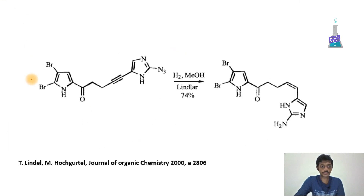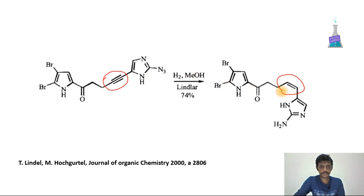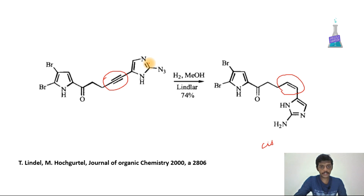Here is an example taken from the Journal of Organic Chemistry. The starting material contains an alkyne, which is converted into a cis alkene. You can see the alkyne is converted to the cis position. The existing alkene in the molecule is not converted further because Lindlar's catalyst is a poisoned catalyst.